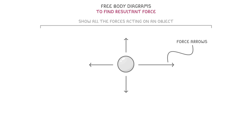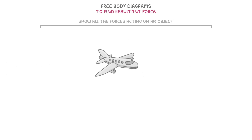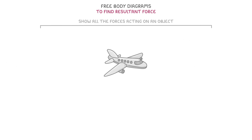We do this using force arrows. So if we took the example of a plane flying through the sky, we would draw its free body diagram by adding a bunch of different arrows that represent all the forces acting on the plane.